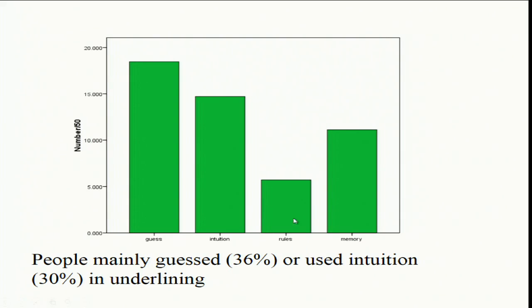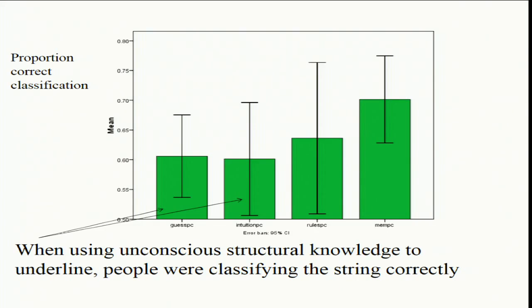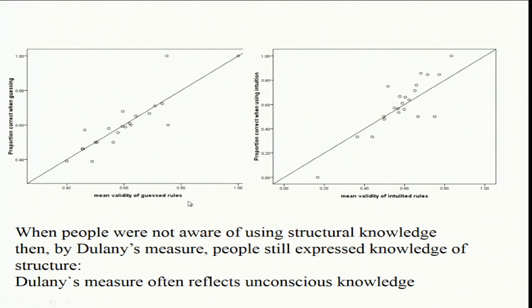And if you look at how correct they are when they give these attributions, they're correct in all cases — when using unconscious structural knowledge to underline or cross out, they still classify correctly. Indeed, if you use Dulany's own plots for the guess and intuition cases, you get the same nice relationships he talked about. But these are cases where subjectively it seems to subjects they're just guessing or using vague feelings. So starting from something like a higher-order thought perspective, or a global workspace perspective — which leads methodologically to the same conclusions — you would conclude that Dulany's measure does not measure the conscious status of the knowledge, it just measures knowledge. And most of that knowledge as measured by Dulany's measures is in fact unconscious.